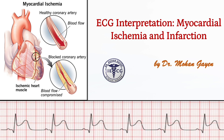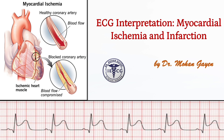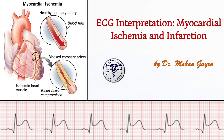Beyond infarction, we'll also explore how bundle branch blocks, fascicular blocks, and rate-related conduction abnormalities affect ECG interpretation. Understanding these patterns is critical for making quick, accurate clinical decisions and avoiding misdiagnosis. Every ECG provides valuable insights — our job is to decode them with precision. Let's get started.